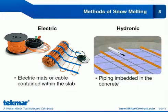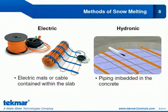Once we've decided upon a snow melt system, we have another choice: are we going to go with an electric snow melt system or a hydronic snow melt system? An electric system will have mats or cable contained within the slab, and a hydronic system will have piping embedded in the slab itself. We'll look at the differences and the advantages and disadvantages of each of these systems in the upcoming slides.